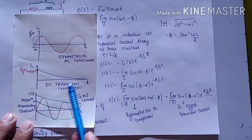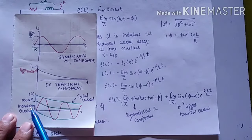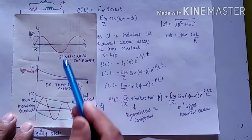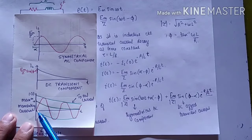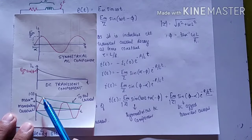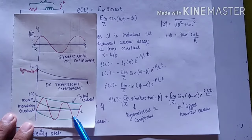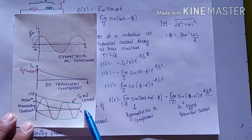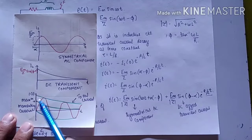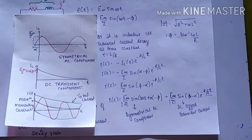The DC transient component is shown as a decaying curve, and the combined graph shows that at the instant of the fault, the AC signal is at its peak value. Afterwards, it settles to the steady-state value, so the current at that point is very high.